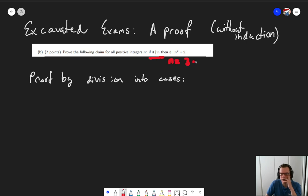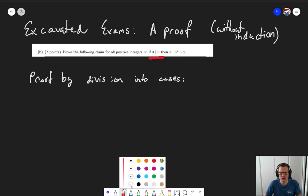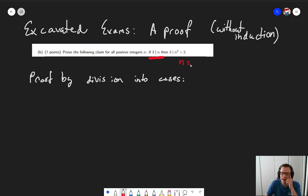Either n is 3 times some integer plus 1 or n is 3 times some integer plus 2. These are the remainders that are non-zero that we can have when dividing by 3 after all. So either 3k plus 1 or 3k plus 2. And that's exactly what we're going to use in our proof.